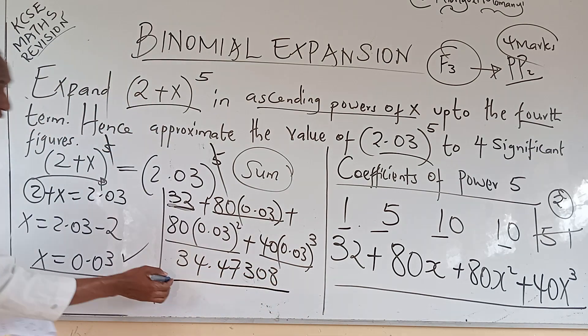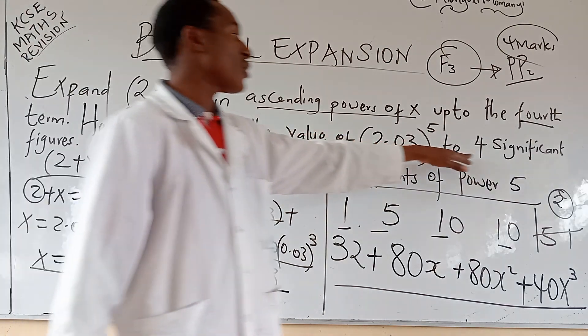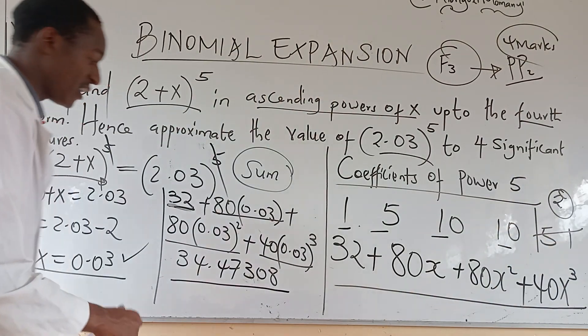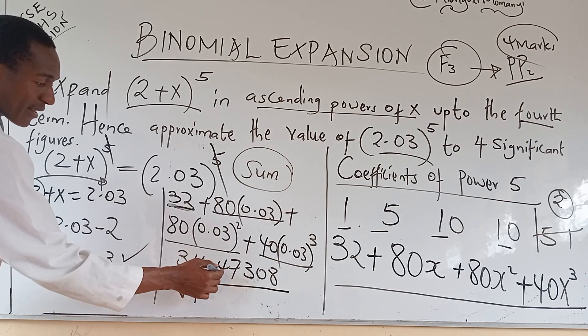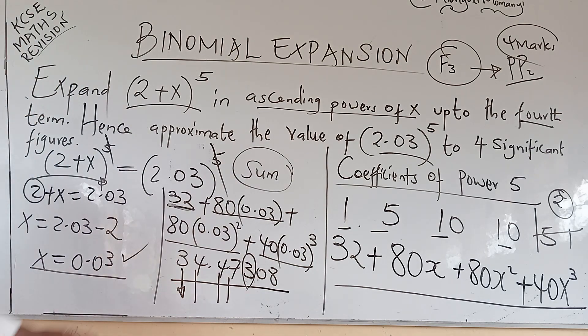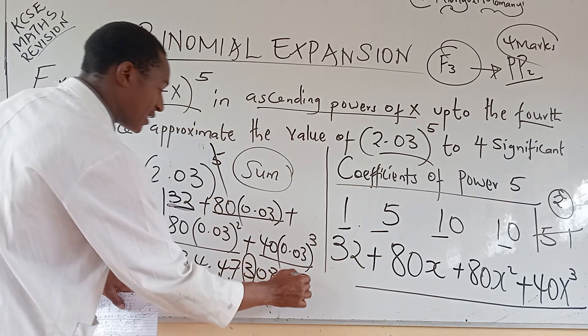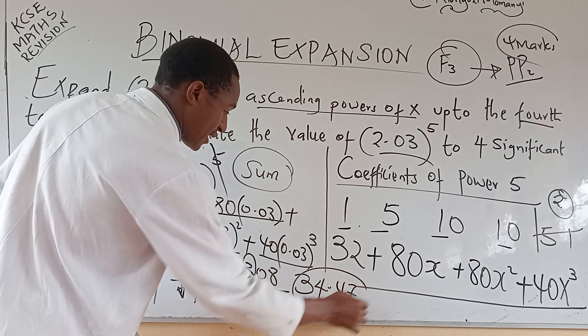What you will get here is going to be 34.47308. But now here, you have to come back to your equation here: to four significant figures. First significant figure, second, third and four. Check on the fifth. It is less than five. So your answer is 34.47. This one gives you the last mark.